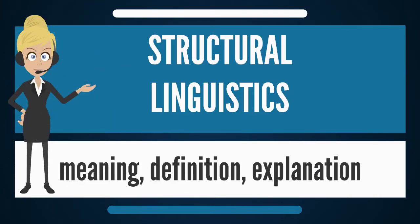Structural linguistics is an approach to linguistics originating from the work of Swiss linguist Ferdinand de Saussure and is part of the overall approach of structuralism. De Saussure's course in general linguistics, published posthumously in 1916, stressed examining language as a static system of interconnected units. He is thus known as a father of modern linguistics for bringing about the shift from diachronic historical to synchronic non-historical analysis, as well as for introducing several basic dimensions of semiotic analysis that are still important today, such as syntagmatic and paradigmatic analysis, or associations, as Saussure was still calling them.